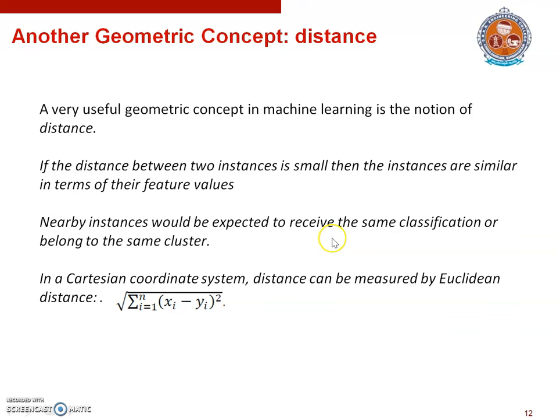The next important geometric concept is distance. Distance is a very important geometric concept in machine learning. If the distance between two instances is small, the instances are similar in terms of their feature values, and so nearby instances could be expected to receive the same classification or belong to the same cluster. In the Cartesian coordinate system, distance can be measured by Euclidean distance, which is given by the square root of the sum of squared distances along each coordinate.